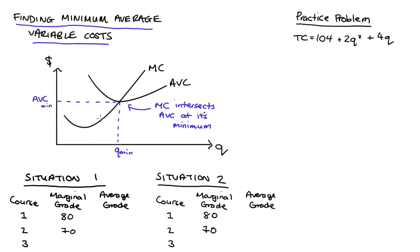So in order to understand why marginal cost intersects average variable cost at its minimum, we just need to appreciate a general property between marginal stuff and average stuff. I've got two situations here — they haven't got anything to do with costs, but I'm thinking about your marginal grade for different courses that you take. By marginal, I just mean the next or additional grade, and your average grade across all courses. In situation one, I've got three courses. For the first course, your marginal grade — your grade for that course — is 80.